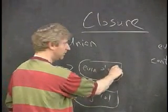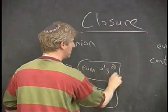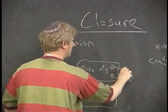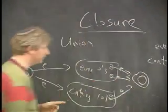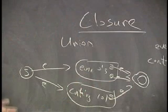Here's a machine that accepts the union of those. New start state, epsilon to here, epsilon to here. Take all the final states from here, all the final states, epsilon to a single final state. Everybody see what I did?